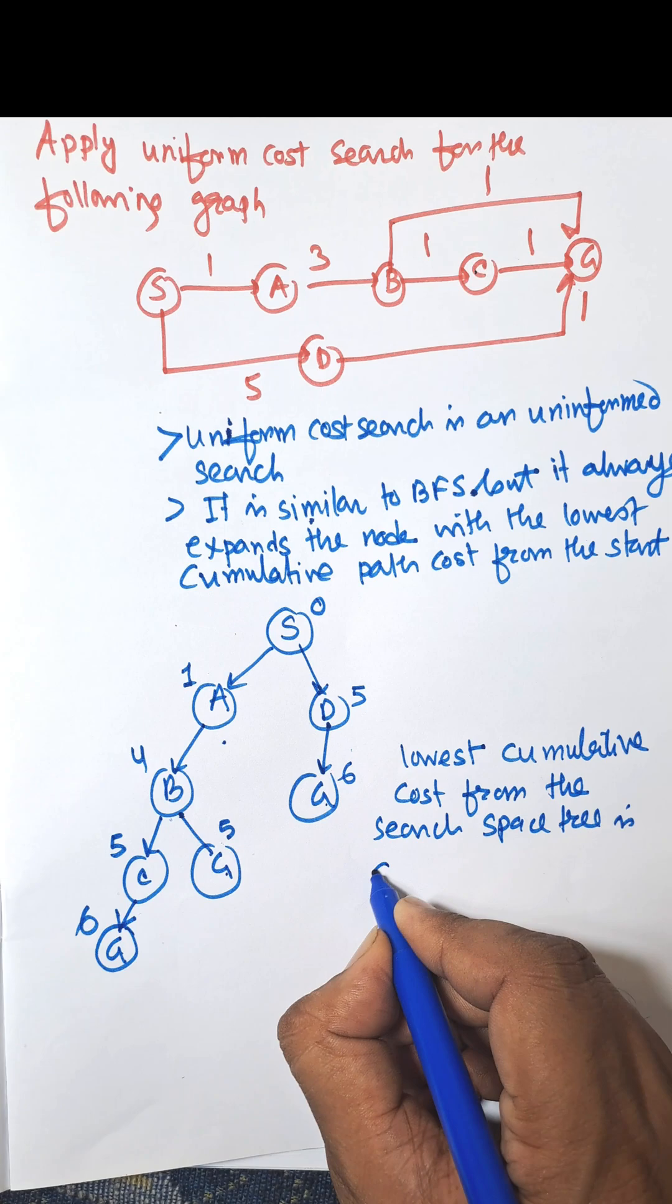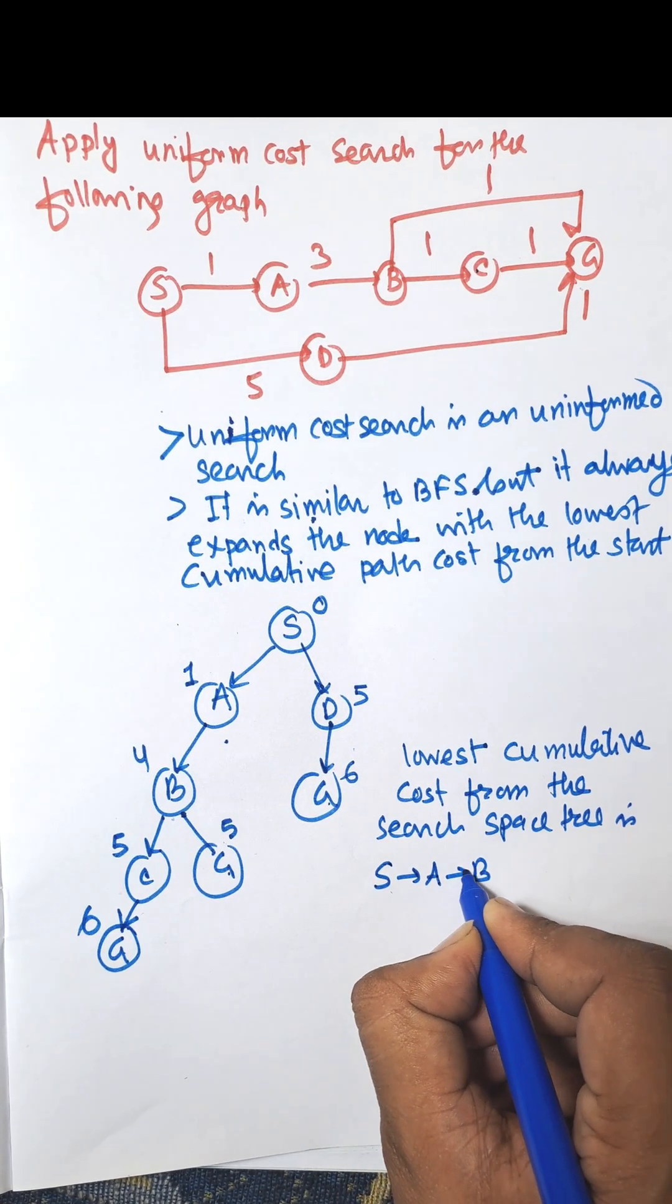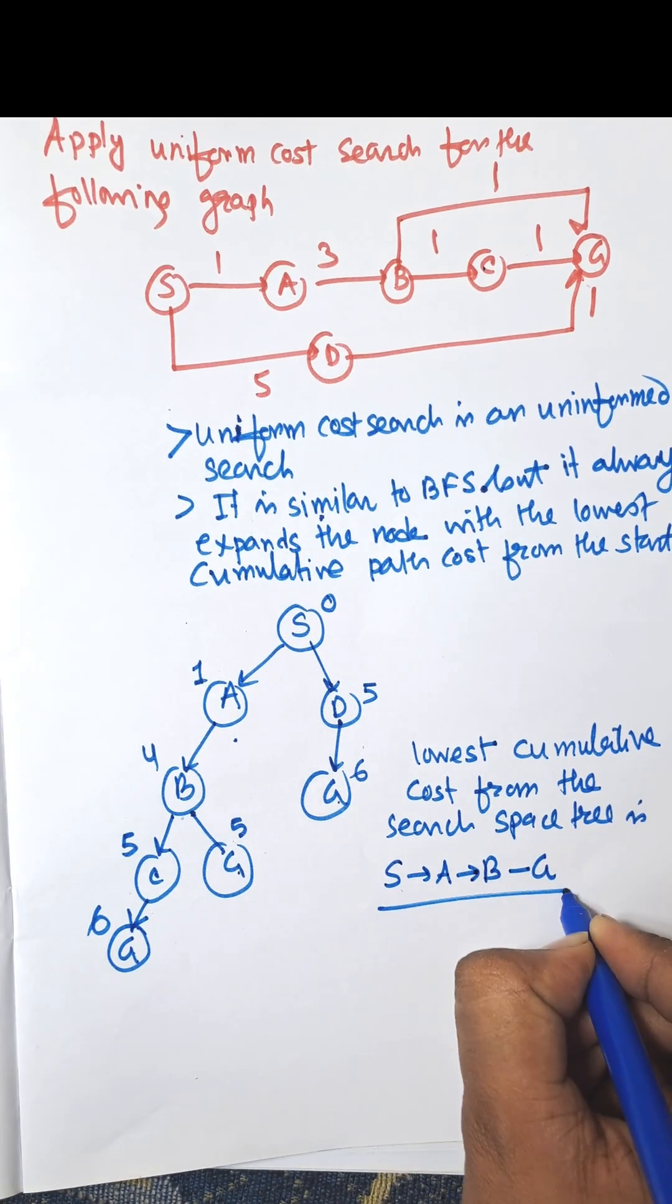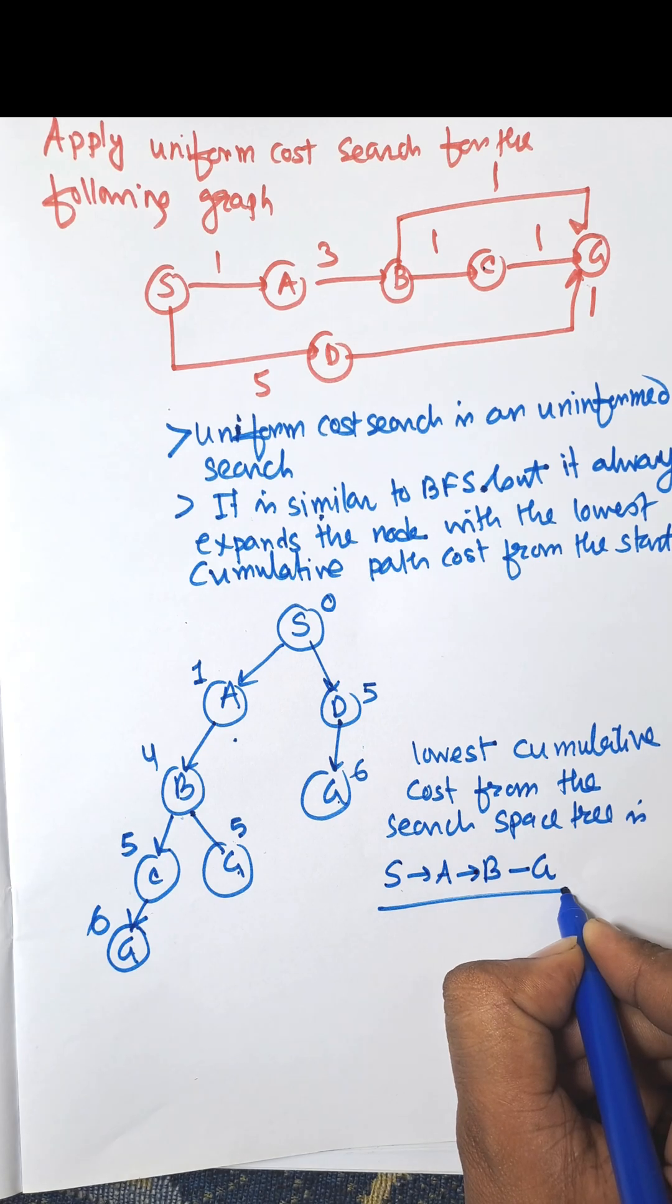So the path is S to A, A to B, and B to G. This is known as uniform cost search path and total cost is 5.